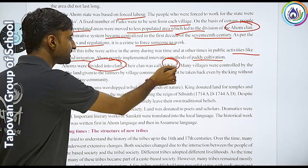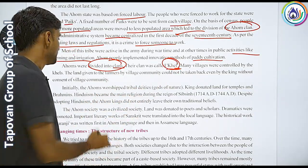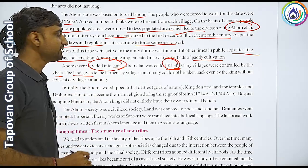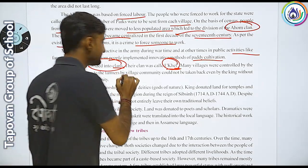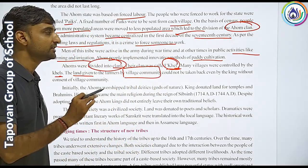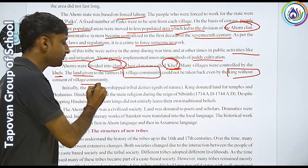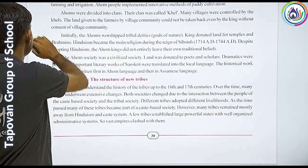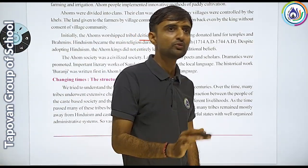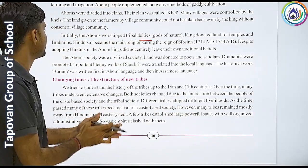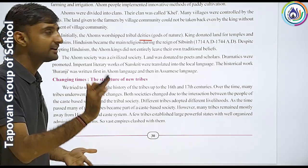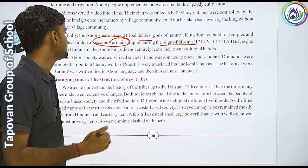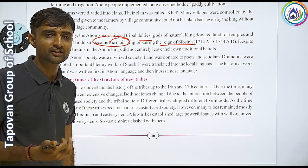Many villages with many clans — i.e., the khel — controlled land, and land given to farmers by the village community could not be taken back by the king without the community's consent. Initially, the Ahoms worshipped tribal deities. Later, kings donated land for temples and Brahmins, and Hinduism became the main religion. Despite adopting Hinduism, the Ahom kings did not entirely abandon their own traditions and beliefs.